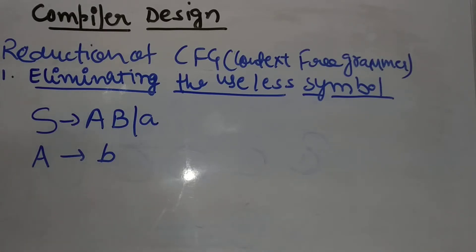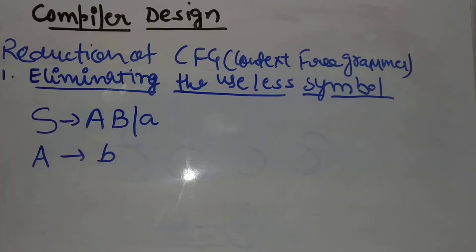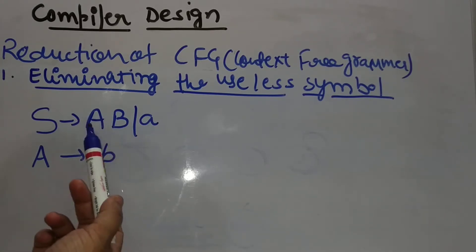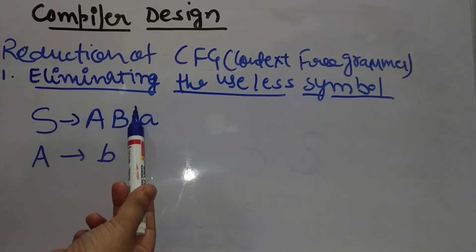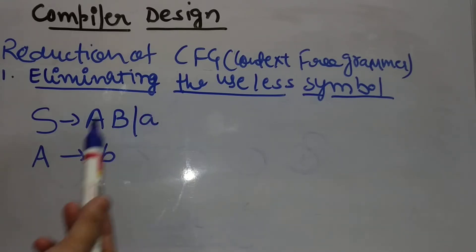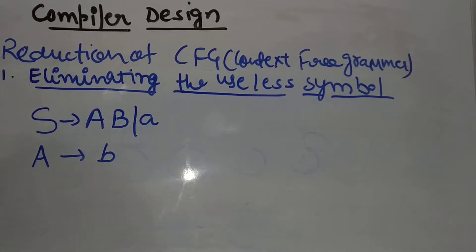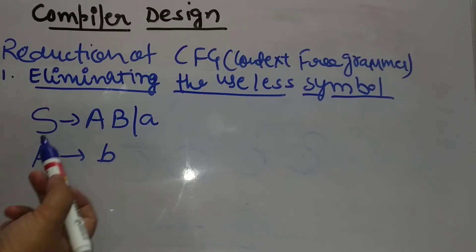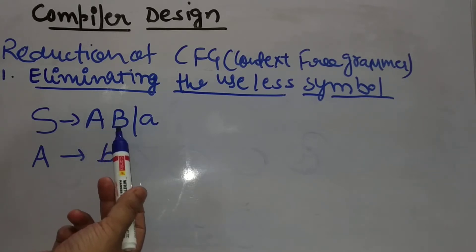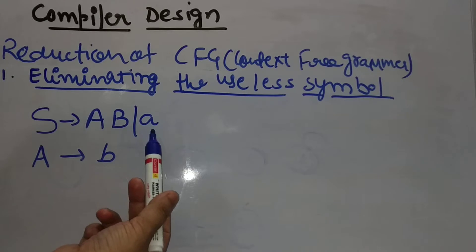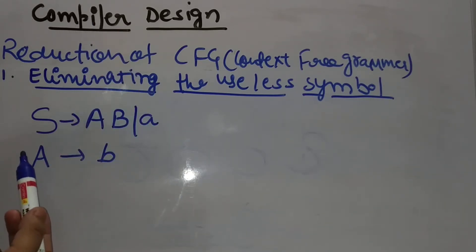So friends, here we have a grammar. We know that there are non-terminal symbols which are capital letters, which are not generating grammar. In the source productions we have two non-terminal symbols — two variables. The first production is S tends to AB, and our second production is capital A tends to B.